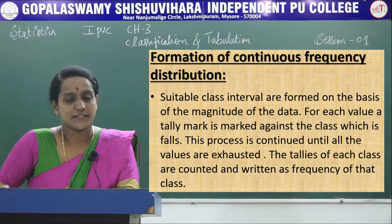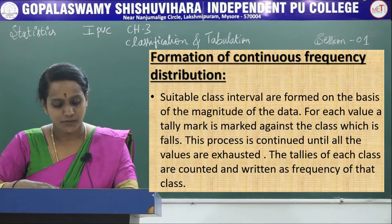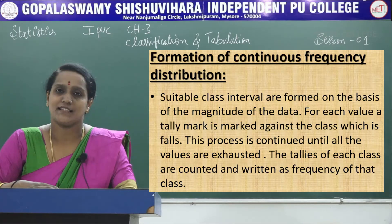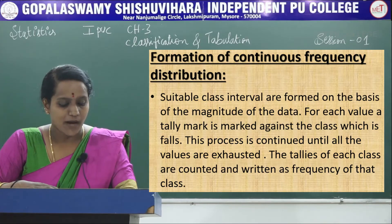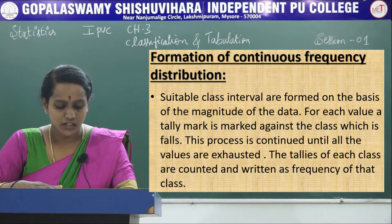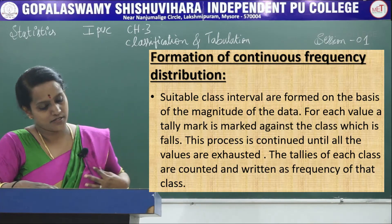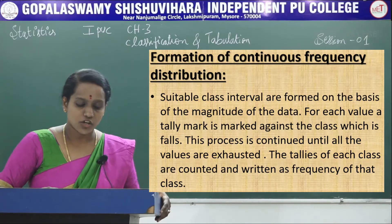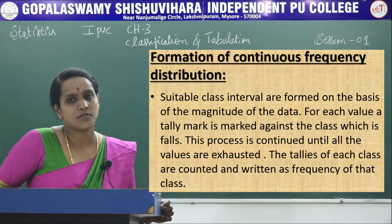Next is the formation of a continuous frequency distribution. Suitable class intervals are formed on the basis of the magnitude of the data — if the data is very large, the range of the class interval will be more. For each value, a tally mark is placed against the class in which it falls; this process continues until all values are exhausted. The tallies of each class are counted and written as the frequency of that class.